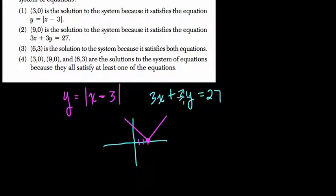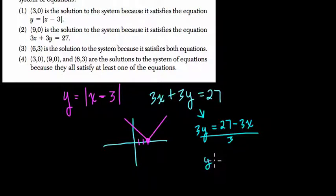And then if we graph this other function, maybe we'll write it in mx plus b form. Here, we isolate y by subtracting 3x from both sides and we get 27 minus 3x. Then we divide everything by 3, and we have y equals 9 minus x. This tells us that the y intercept is 9, and then the slope is negative 1, so we're going down 1 over 1 and so forth.